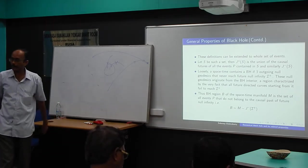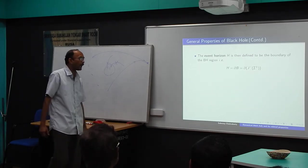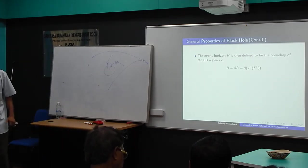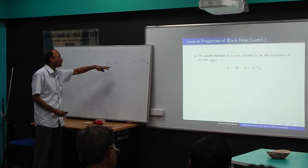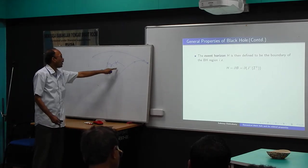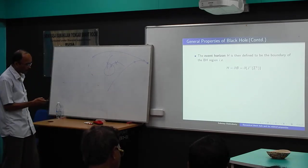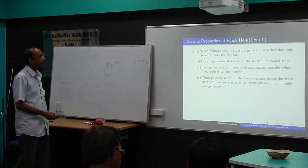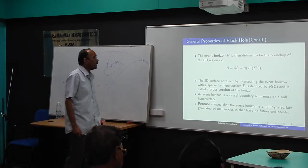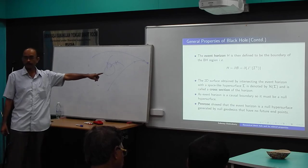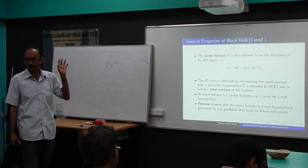Now I define the boundary of the black hole region, because the two regions are totally disconnected. The boundary of B is the event horizon. Mathematically, the event horizon is the boundary of J⁻(I⁺) — the boundary of the causal past of future null infinity. So the event horizon has a very nice mathematical definition: it is ∂J⁻(I⁺).